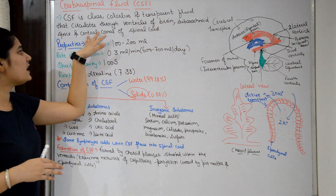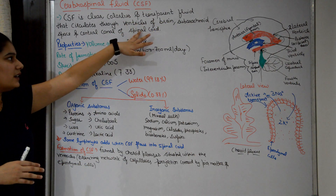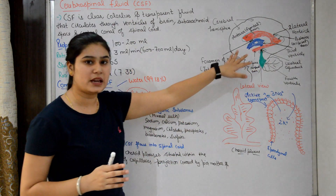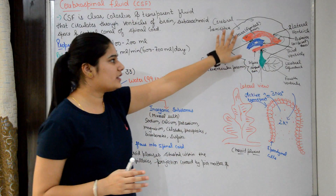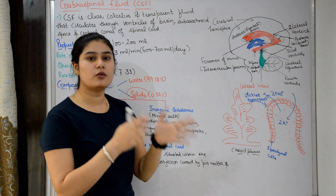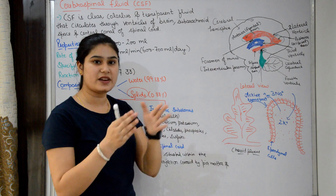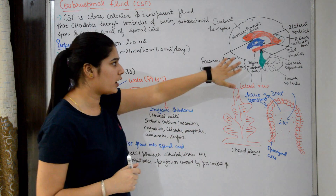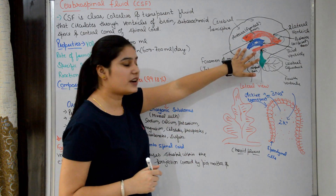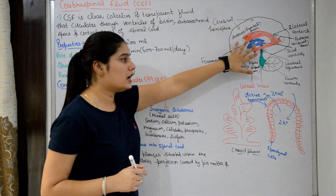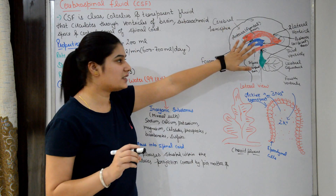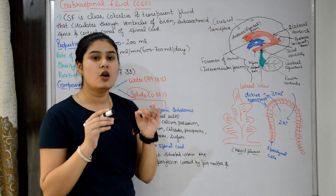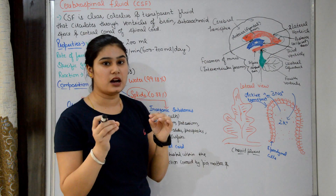CSF circulates through the ventricles of the brain, subarachnoid space, and the central canal of the spinal cord. Ventricles of the brain are hollow spaces present in our brain. I have explained these in the previous video.